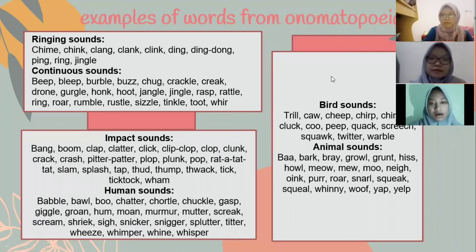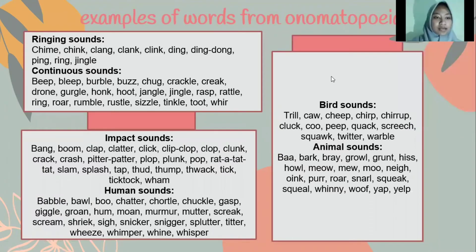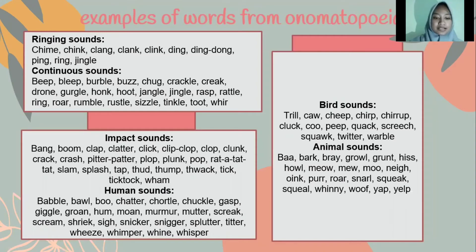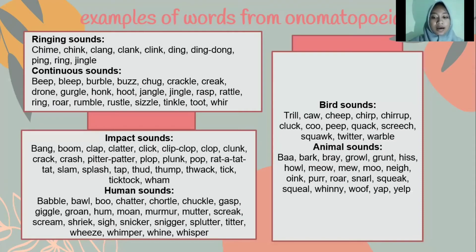Examples of words from onomatopoeia. Ringing sounds: chime, ching, and others. Continuous sounds: beep, bleep, barbells, and others. Impact sounds: bang, bang, bomb, clap, and others. Human sounds: bubble, ball, bow, and others. Bird sounds: trill, caw, sheep, chirp, and others. And last, animal sounds: bark, bray, and others.